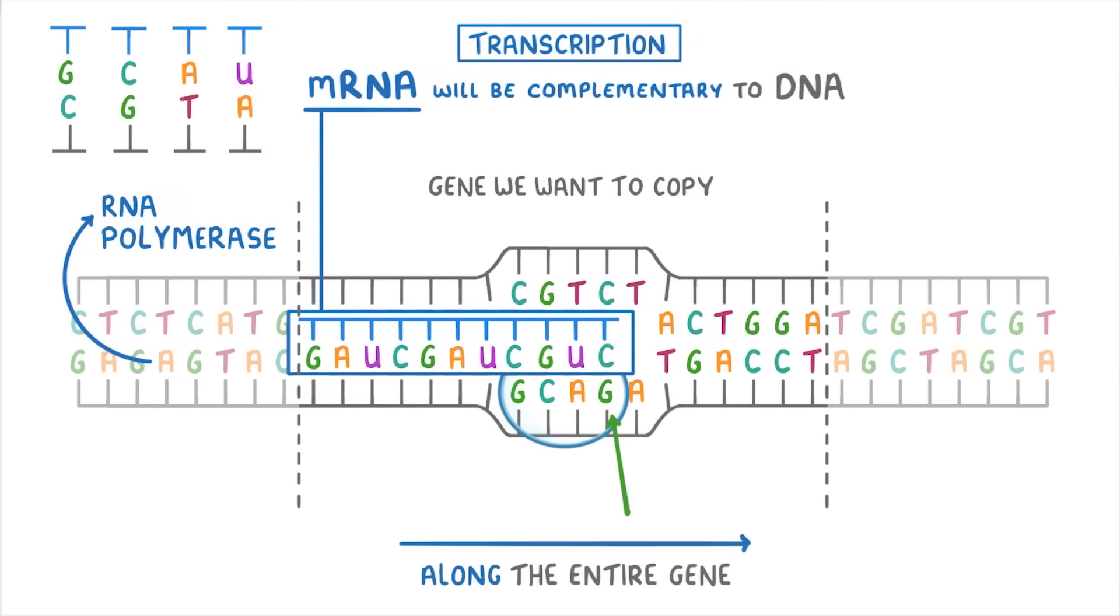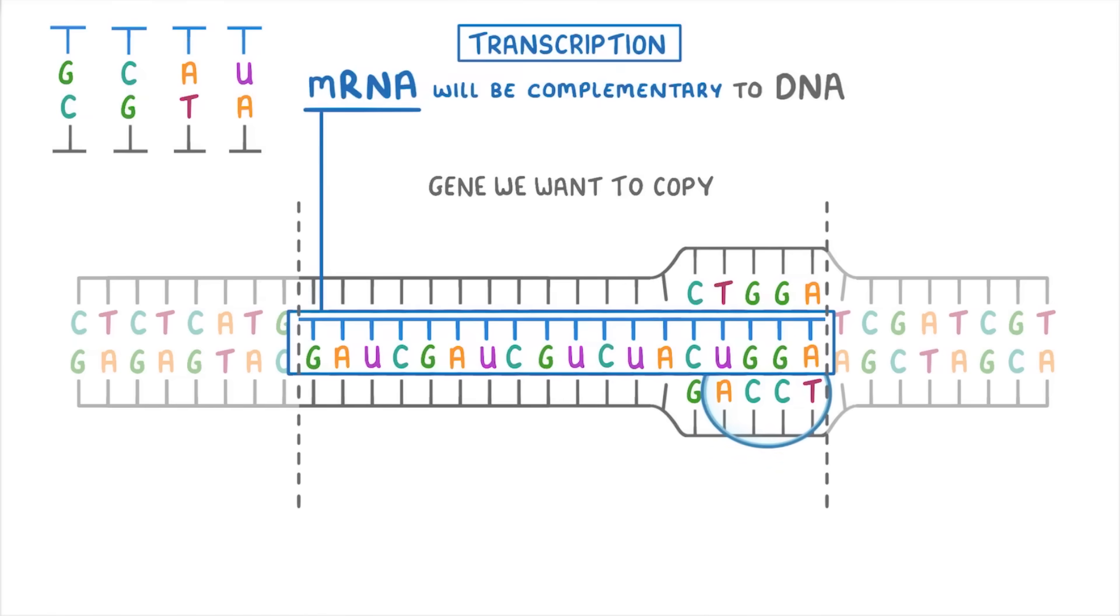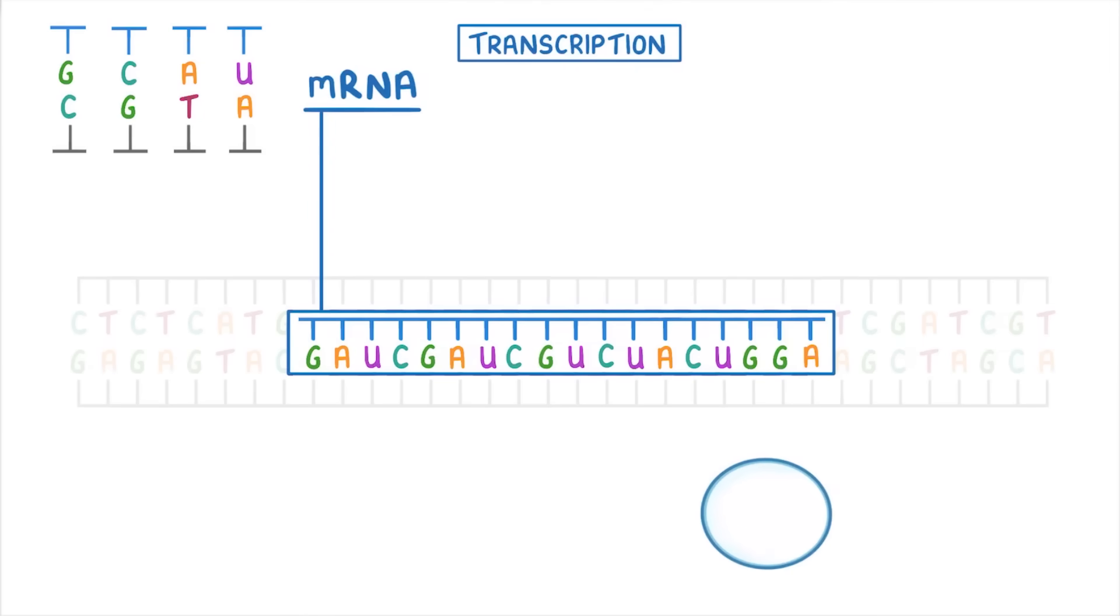One thing to notice here is that the DNA strand keeps on separating just ahead of the RNA polymerase and closing just behind it, so that only a small section of the DNA is ever exposed. Once it's moved along the entire gene and finished making the mRNA strand, the RNA polymerase detaches from the DNA, and the DNA strands can close back up.